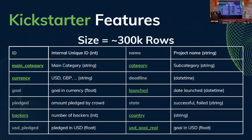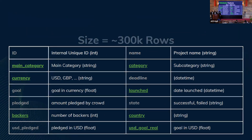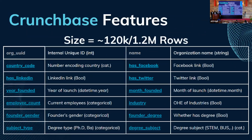For the Kickstarter features, the dataset was around 3,000 rows and included features like category, subcategory, country, the funding goal, and the number of backers. For Crunchbase, we had two datasets — one with around 120,000 rows and one with 1.2 million — and they included features like country, industries, and information about the founders.